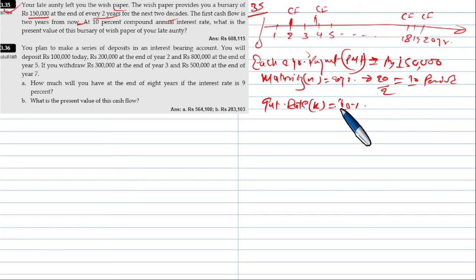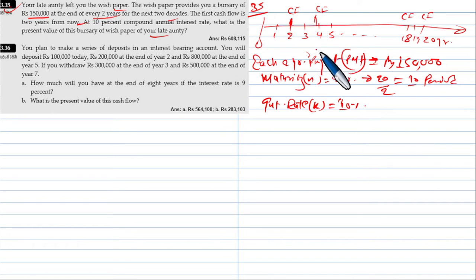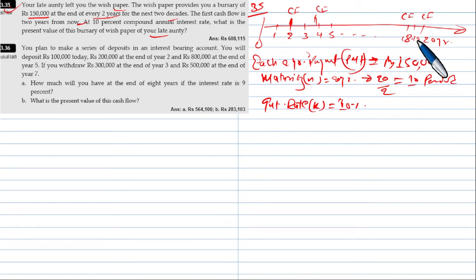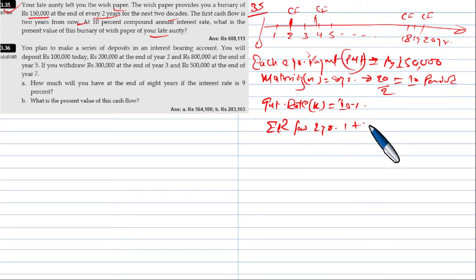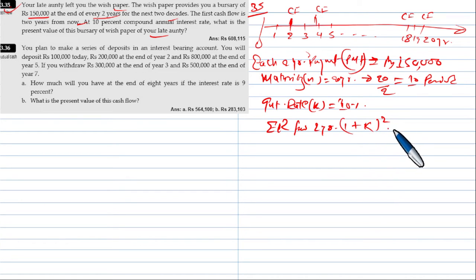We want the present value. There are two things: the effective rate for two years. The effective rate for two year is equal to one plus the annual rate to the power of 2, minus 1.